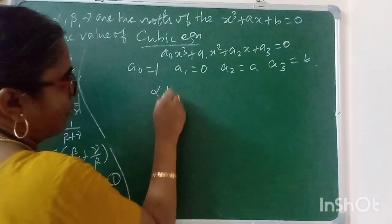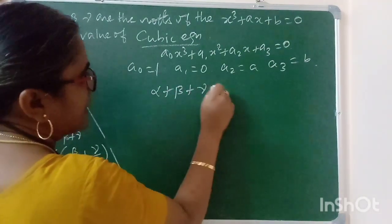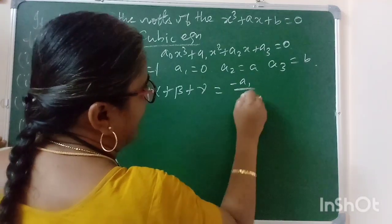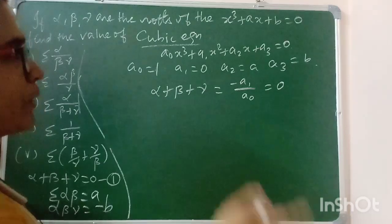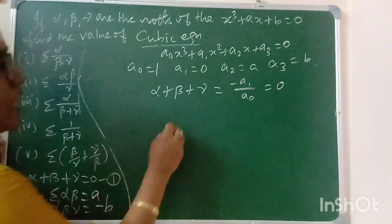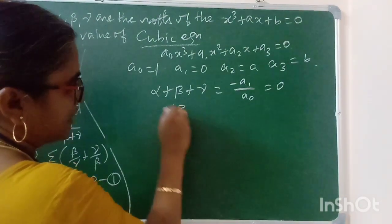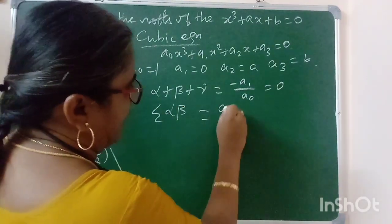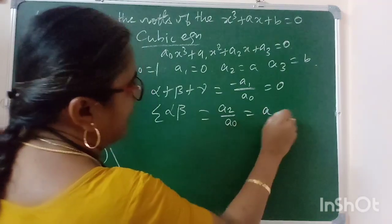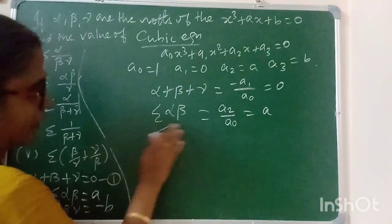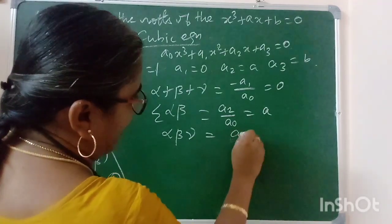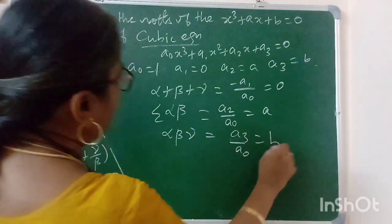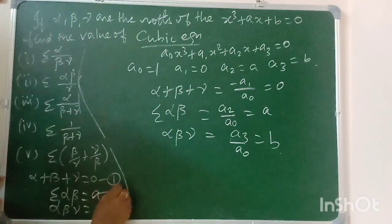The sum of the roots is alpha plus beta plus gamma, which equals minus A1 by A0. The product of the roots — alpha·beta·gamma — equals minus A3 by A0, which is minus B.